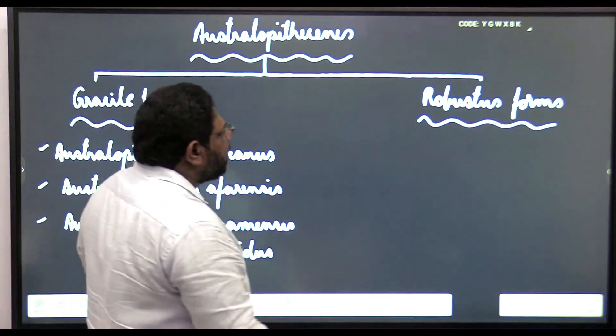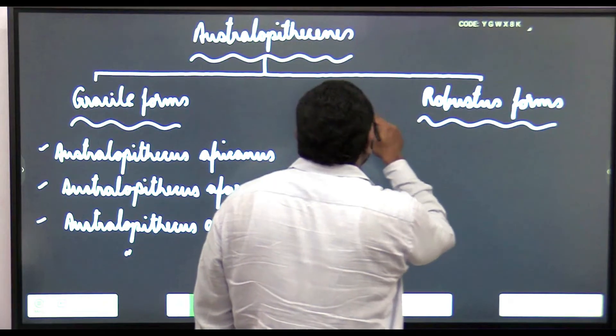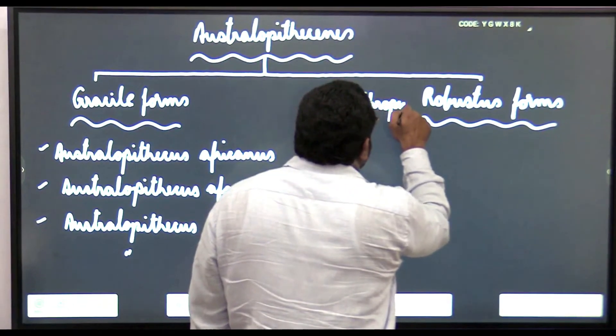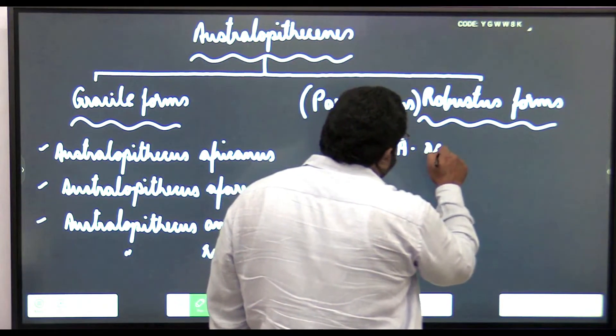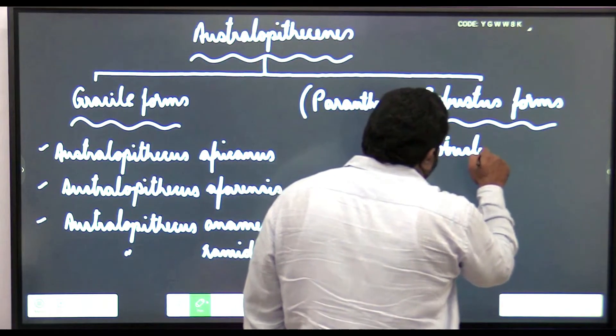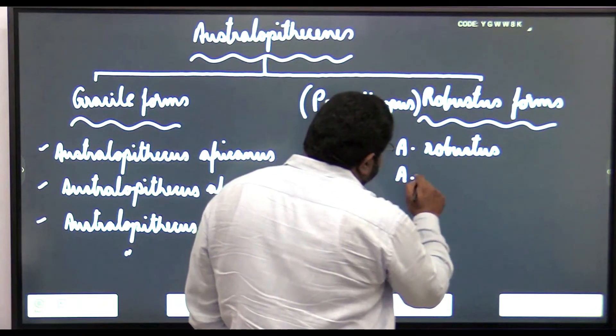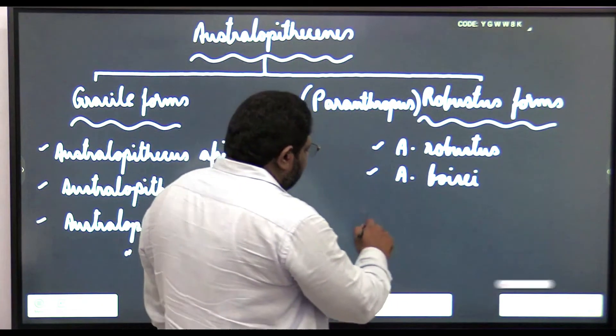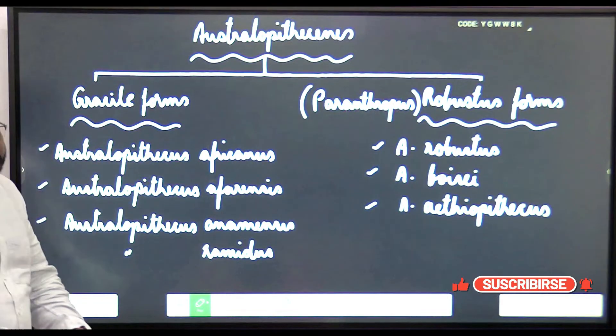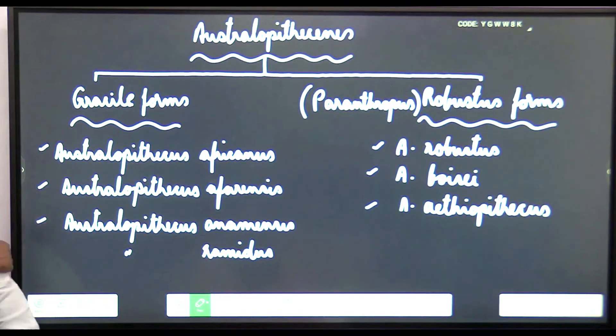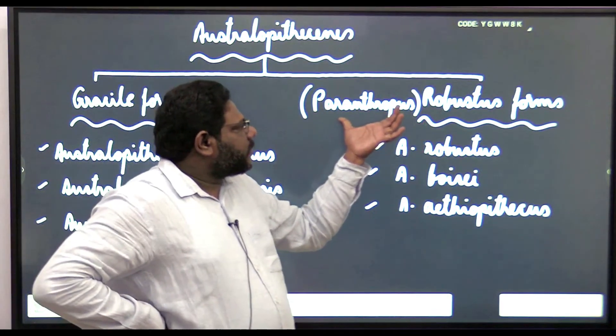Robustus forms - you can call all these as Paranthropus. Robustus forms are Paranthropus. You can write Australopithecus robustus or you can write Paranthropus robustus, Paranthropus boisei, and so forth. All gracile forms are these; robustus forms are also known as Paranthropus.